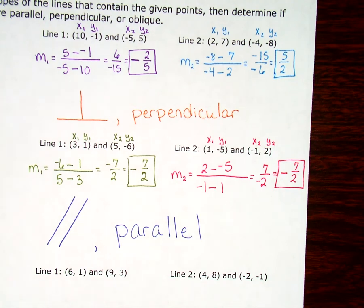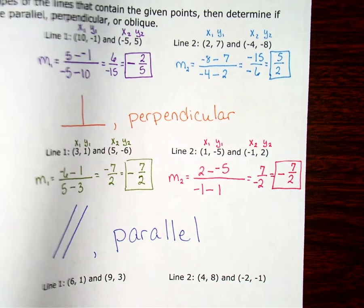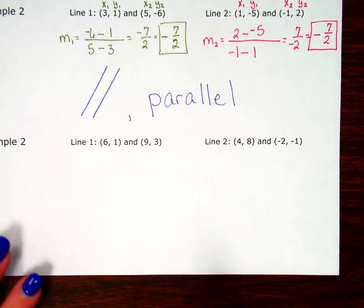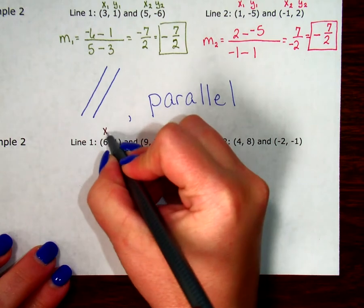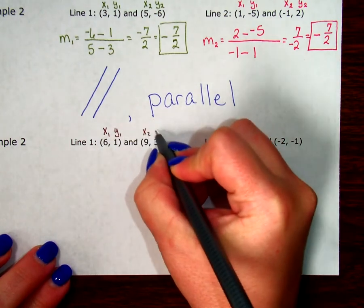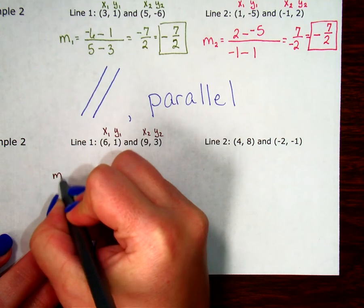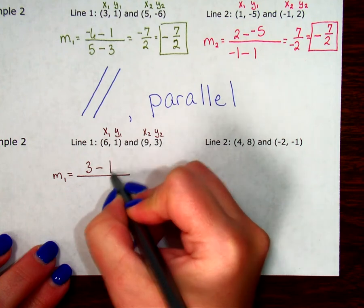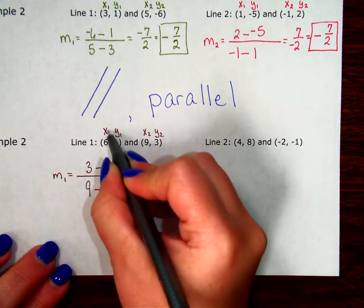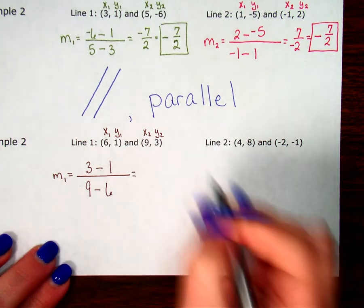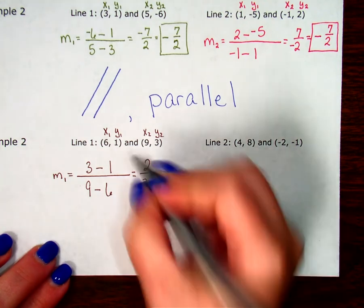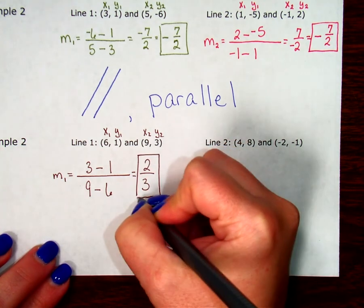Maybe the last one's oblique. But I don't want to trust that because I know it's tempting to just immediately go, oh, the last one has to be oblique. But sometimes your teacher is tricky like that and they're not going to give you all 3 because they want to make sure you're really checking them out. So, let's do it just to make sure. Label x1, y1, x2, y2. Slope 1. Start with your second y, 3 minus 1. Then your x is 9 minus 6. 3 minus 1 is 2. 9 minus 6 is 3. 2 over 3 does not reduce. That is my first slope.